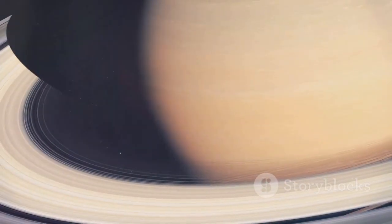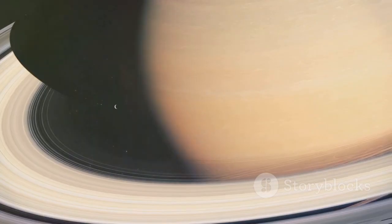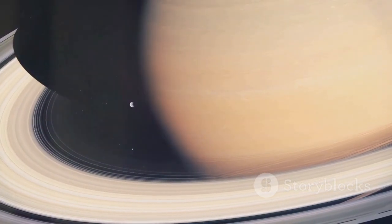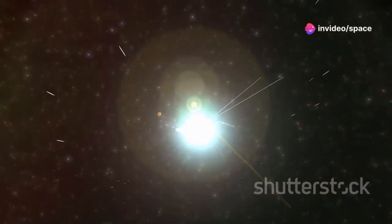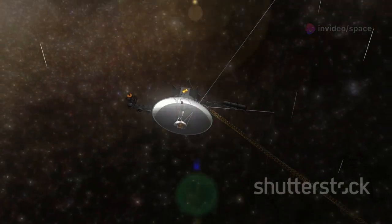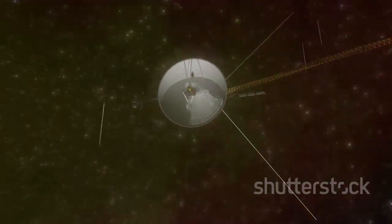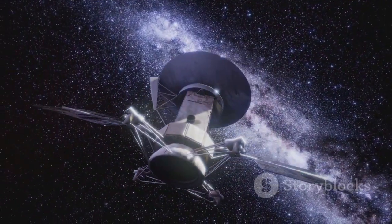The first major boundary they encountered was the termination shock, where the solar wind suddenly slows down and becomes turbulent. Voyager 1 crossed this invisible line in 2004, followed by Voyager 2 in 2007, marking a significant milestone in their journey.